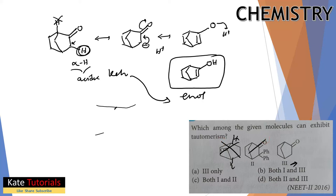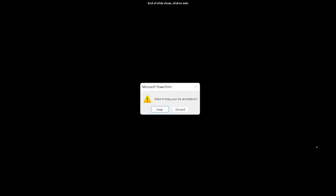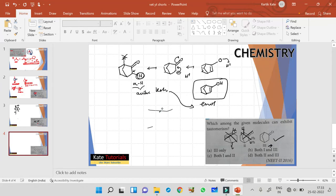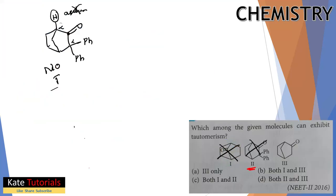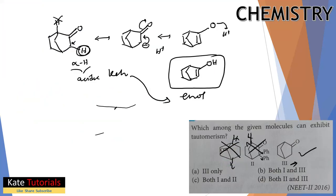So in summary: molecules 1 and 2 do not show tautomerism because their alpha hydrogens are not acidic (bridge hydrogens). Only molecule 3 shows keto-enol tautomerism. Therefore, the correct answer is option A - only the third molecule shows tautomerism. Options B, C, and D are incorrect.